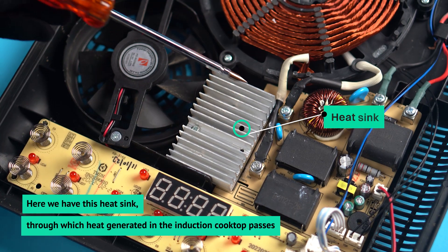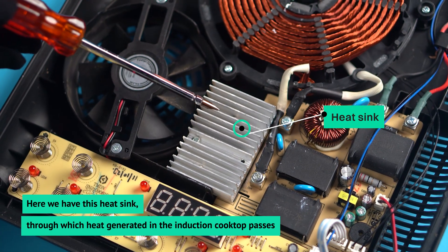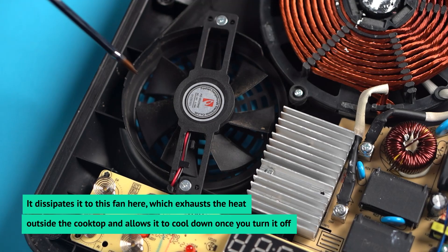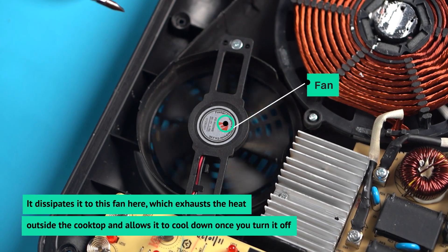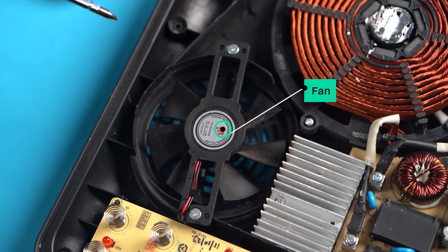Here, we have this heat sink, through which heat generated in the induction cooktop passes. It dissipates it to this fan here, which exhausts the heat outside the cooktop and allows it to cool down once you turn it off.